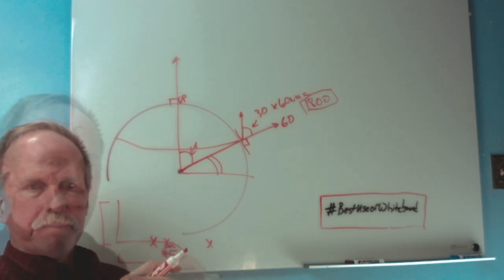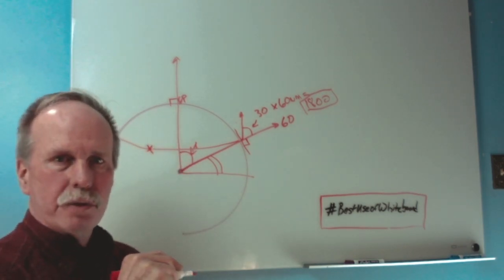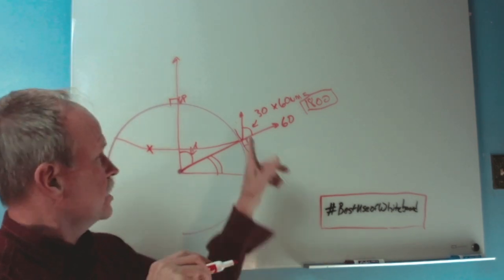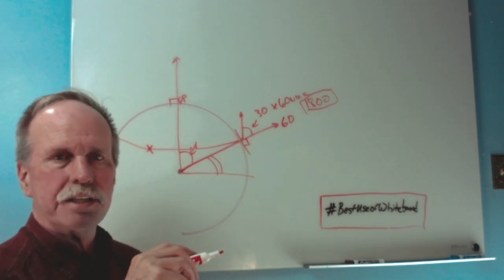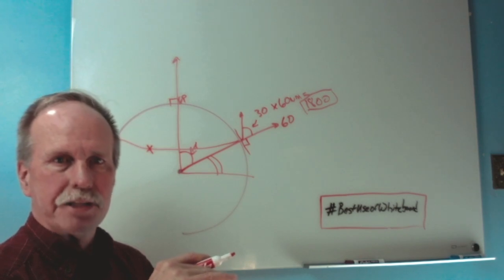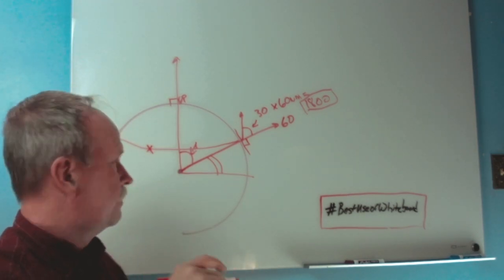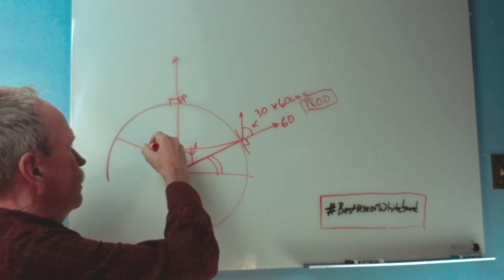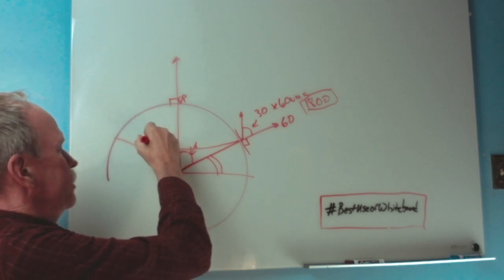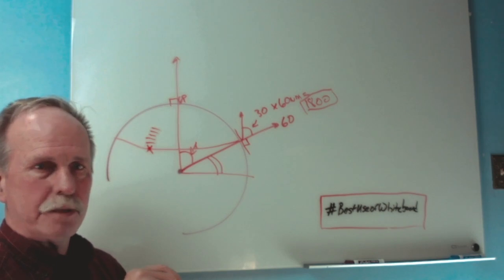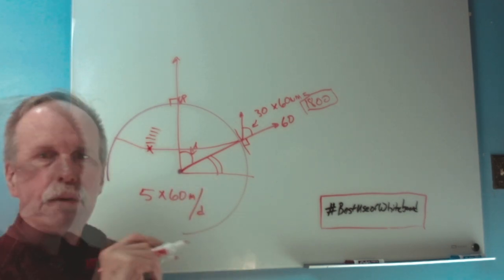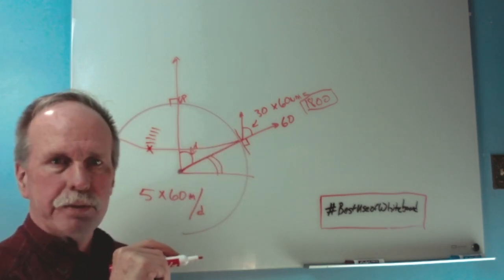Where does that come into play in navigation? Say we think we're at 60 degrees north latitude, and we shoot a measurement to Polaris, and we find that the angle to Polaris is not 60 degrees — it's 65 degrees. Where are we? We're at 65 degrees north latitude. At 60 degrees, we should see an angle of 60, but we see 65, which means we're 5 degrees closer to the pole. That's 5 times 60 miles per degree — we would be 300 miles closer to the geographic position than we thought.